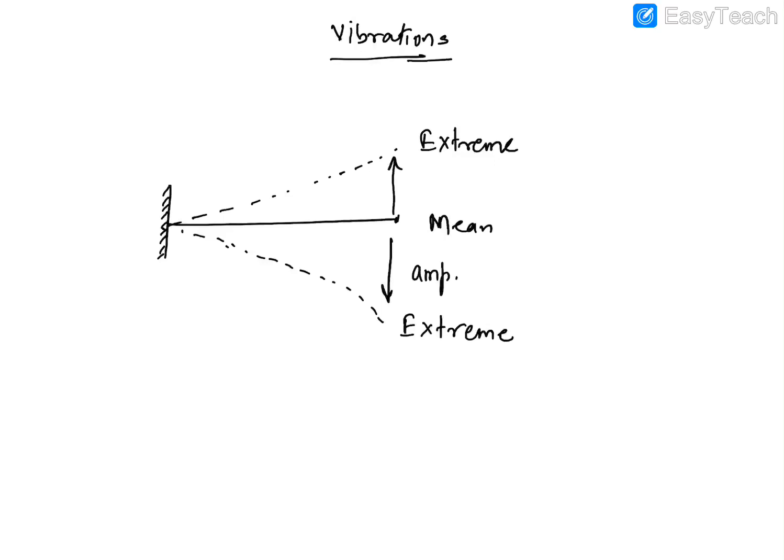The vibration of a string, the oscillation of a pendulum, or a ruler — all of these are vibrating bodies. Whenever you vibrate a body, its vibrations fall into three types.